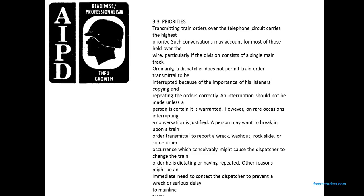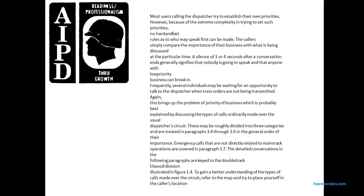Ordinarily, dispatchers do not permit train orders to be interrupted during transmission, as the importance of copying and repeating orders correctly is paramount. Interpretation should not be made unless warranted. On rare occasions, a conversation may justify breaking in upon a train order transmission to report a washout, rock slide, or some other occurrence that might cause the dispatcher to change the direction of trains or prevent a serious wreck.